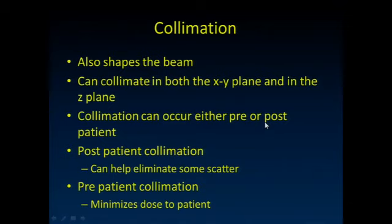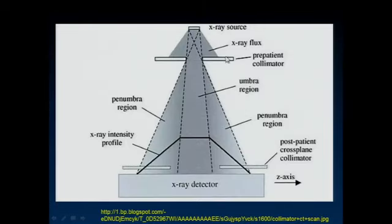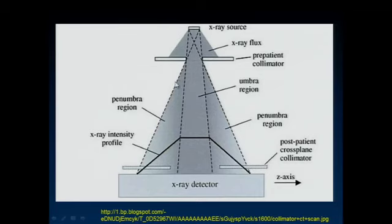We also do collimation, just like in fluoroscopy. You can collimate in either the z-axis or the x-y axis, pre- or post-patient. Post-patient collimation helps eliminate some scatter hitting the detector, which is important in certain types of imaging. Pre-patient collimation reduces dose to the patient. We'd like to bring pre-patient collimators in so that our x-ray beam is no wider than the detectors—it makes no sense to irradiate parts of the patient where that radiation won't strike the detector. Post-patient collimators can also eliminate scattered radiation from outside the primary beam field from striking the detector.